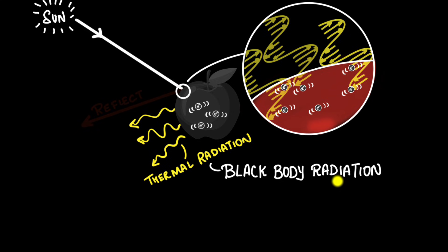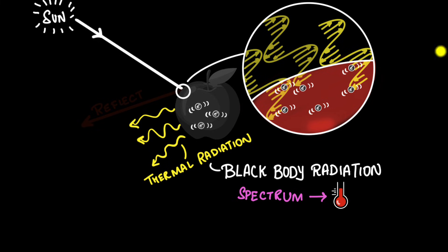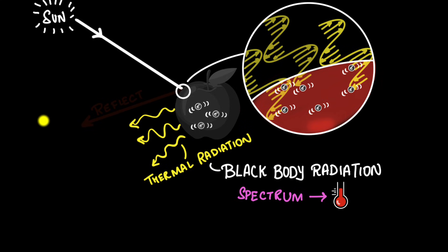The cool thing about black body radiation is that its spectrum — the different colors that come out and the brightness at each color — depends only on the temperature of the black body. It does not depend on what light was shining on it, or what material it's made of. None of that matters. The characteristics of black body thermal radiation depend only on its temperature. Which is awesome, because that means we can apply it to stars — stars are also giving out thermal radiation — and that's what we'll do now.